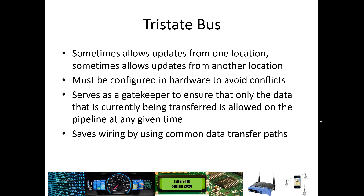What we will do to transfer data is use what is known as a tri-state bus. The tri-state bus will allow transfer from one location to another by only allowing certain registers to access the bus at certain times. We will use hardware to make sure there are no conflicts on the bus where multiple registers are trying to transfer at the same time. This tri-state bus will act as a gatekeeper, and a common bus is going to allow us to save on wiring.